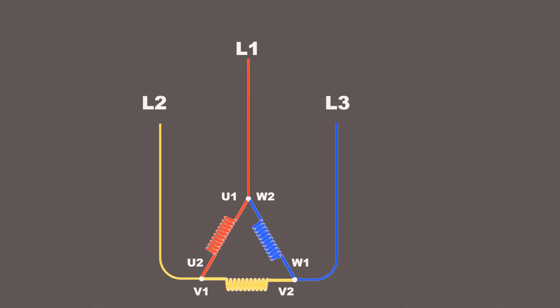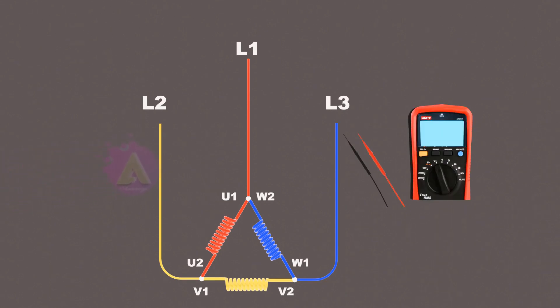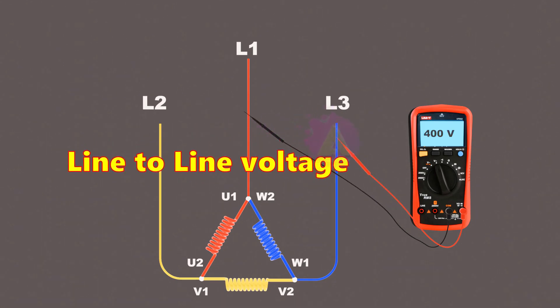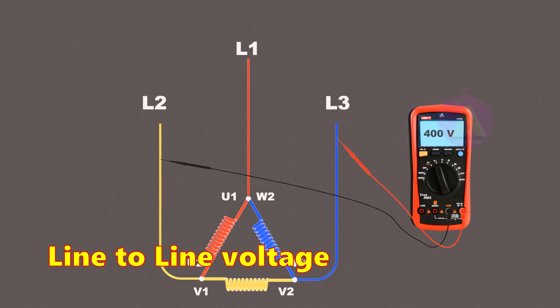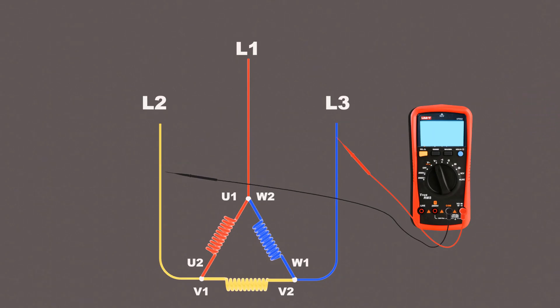Let's say we have a motor connected in delta with a supply voltage of 400 volts. That means when we measure the voltage between any two phases we will get a reading of 400 volts. We will call this line-to-line voltage. Now if we measure across the two ends of the coil we again see the line voltage of 400 volts.